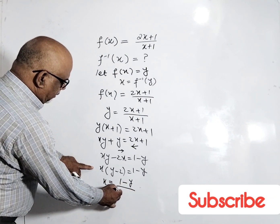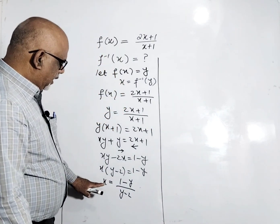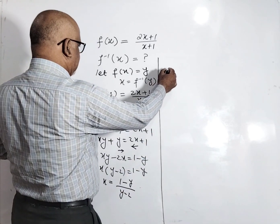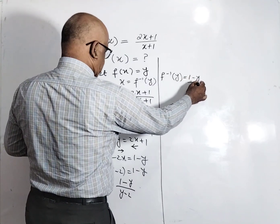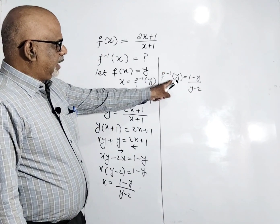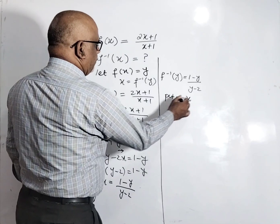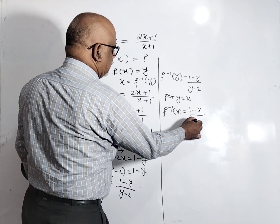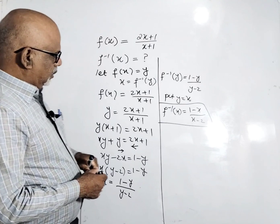So the value of x equals 1 minus y divided by y minus 2. Since x equals f inverse of y, we have f inverse(y) equals 1 minus y divided by y minus 2. Replacing y with x, the inverse function is f inverse(x) equals 1 minus x divided by x minus 2.